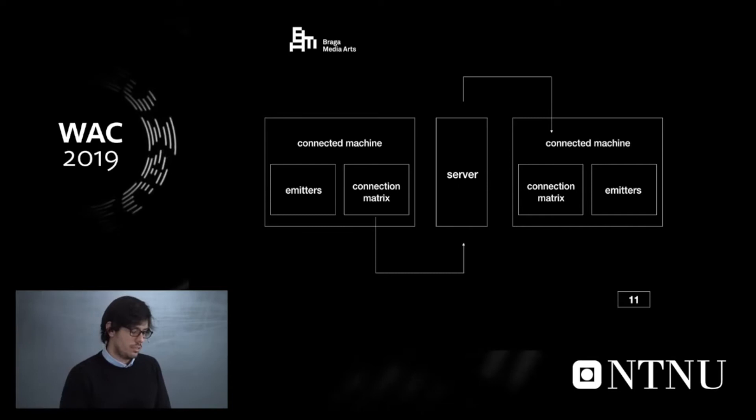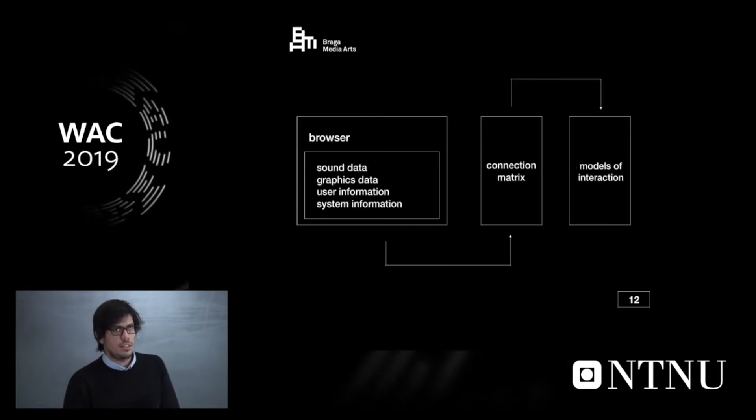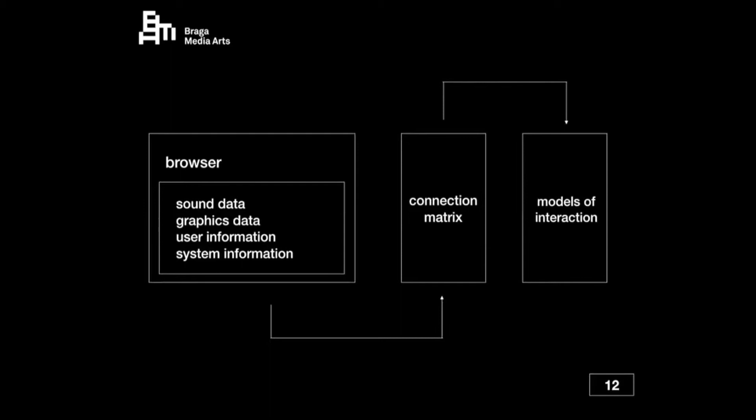What we do is we gather sound data — like properties of the filters — graphics data like color intensity, user information like where you are and which model you're in, and system information like which machine it's running on and whether it supports WebGL. It all goes through the connection matrix, and this is where we define the model — so we assign which instance is the synthesizer, which is the background, and so on.